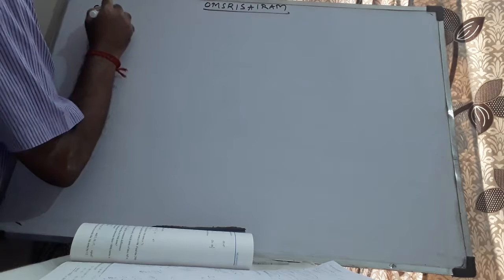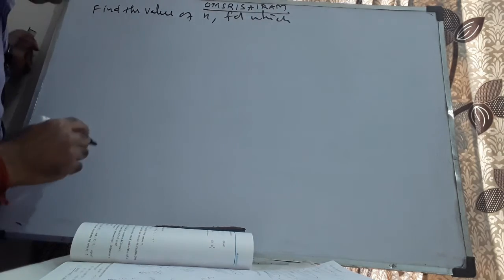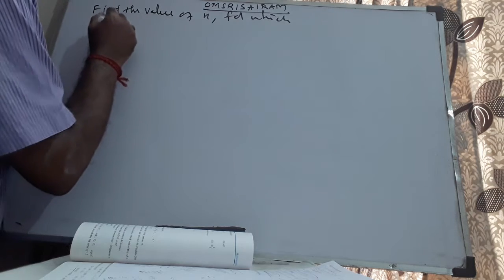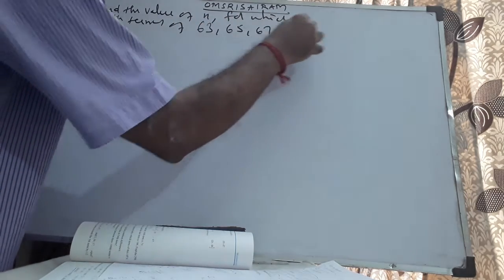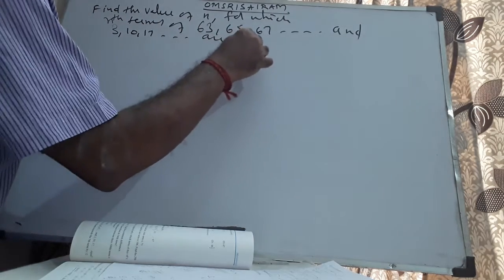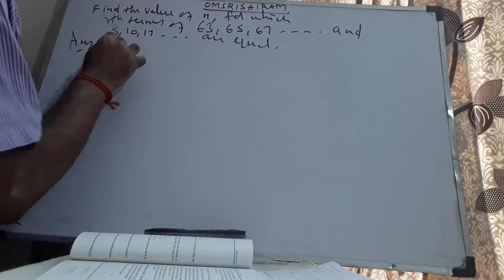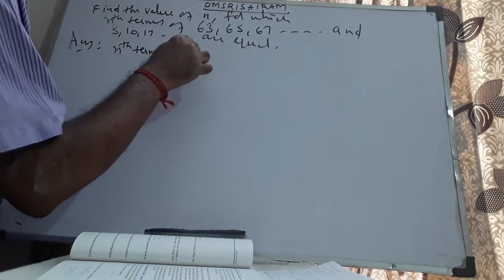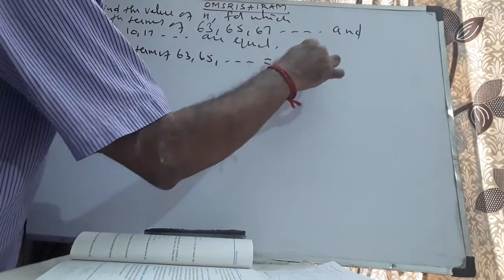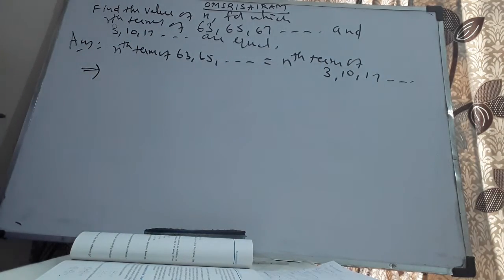The first problem meant for today goes like this: Find the value of n for which the nth terms are equal. The nth term of 63, 65, 67, etc. is equal to the nth term of 3, 10, 17, etc. The formula is a plus n minus 1 into d.